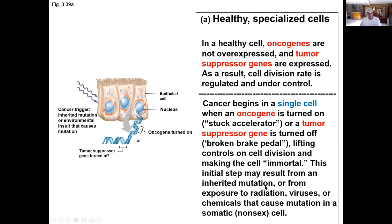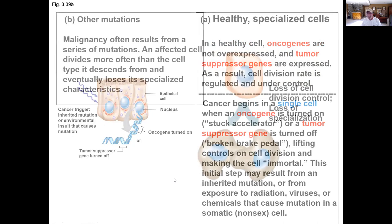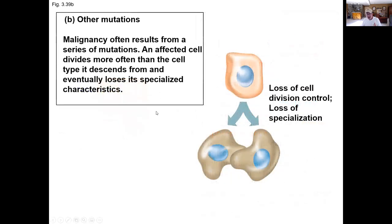In essence, cancer occurs when a normal healthy cell undergoes a mutation that raises green lights at all the checkpoints, resulting in uncontrolled cell division. Not only that, but the cell loses its special ability to function — cancer cells are de-differentiated cells that are not functioning like normal healthy non-cancerous cells. So not only do you lose cell division control, but you also lose specialization — the cells don't function the way they're supposed to.